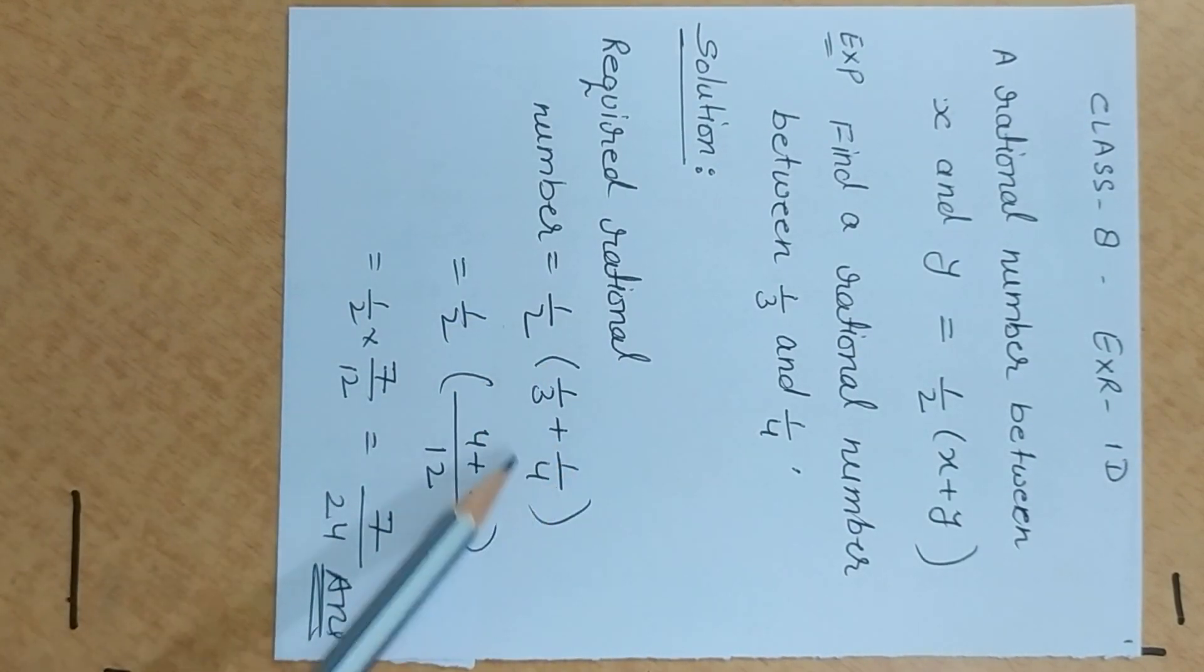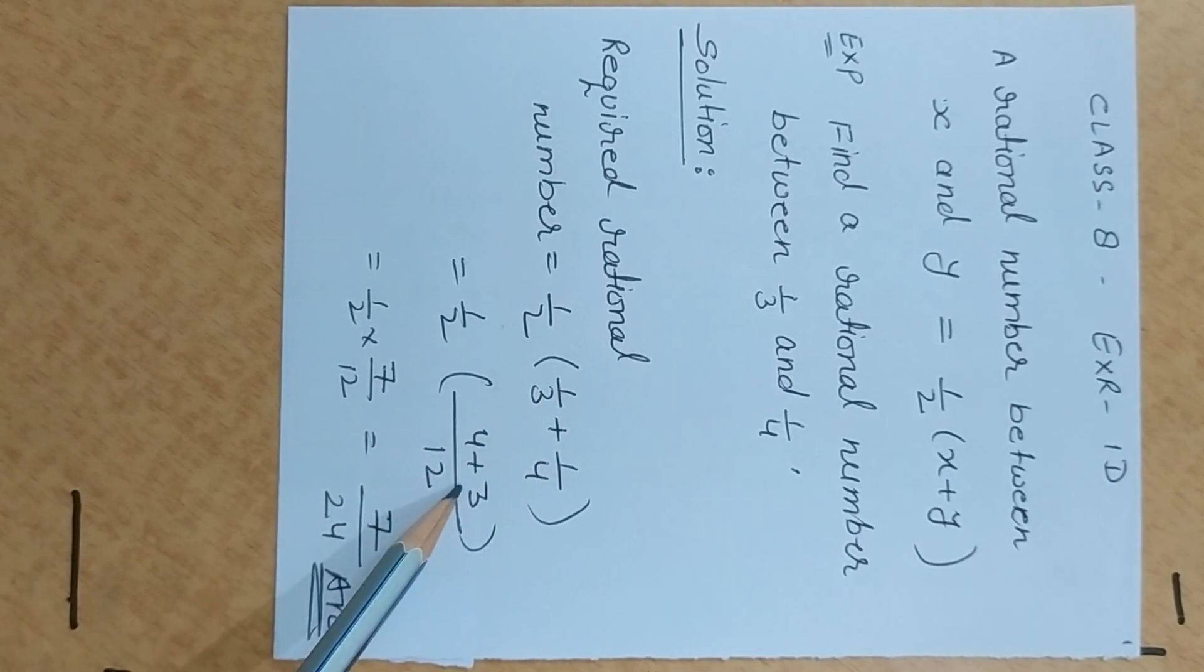1 upon 2, 1st term plus 2nd term. Simplifying, taking LCM as 12: 4 plus 3 is 7 by 12.